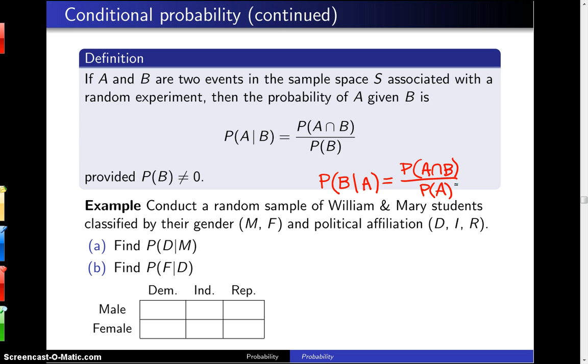Now as an example, conduct a random sample of William and Mary students classified by their gender, male and female, and their political affiliation: Democrat, Independent, and Republican. Let's say we did such a survey and we've got 10,